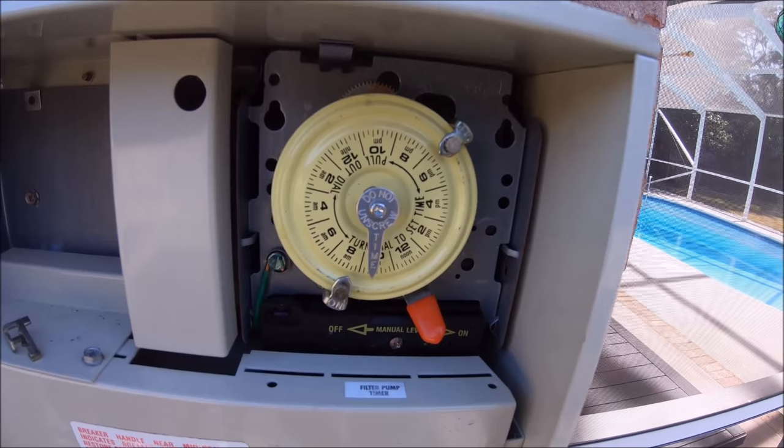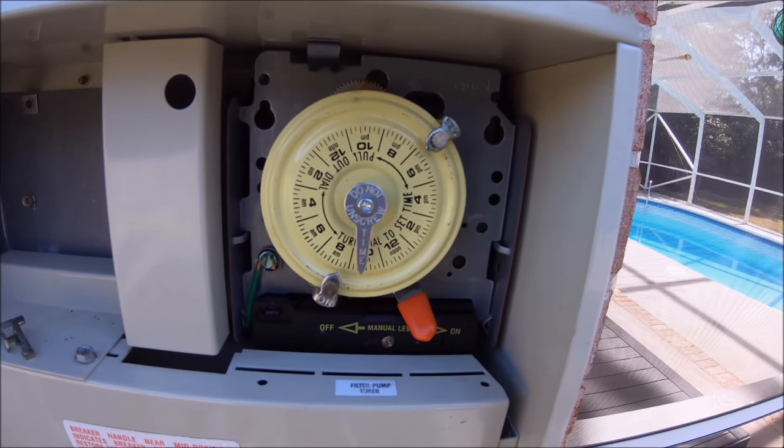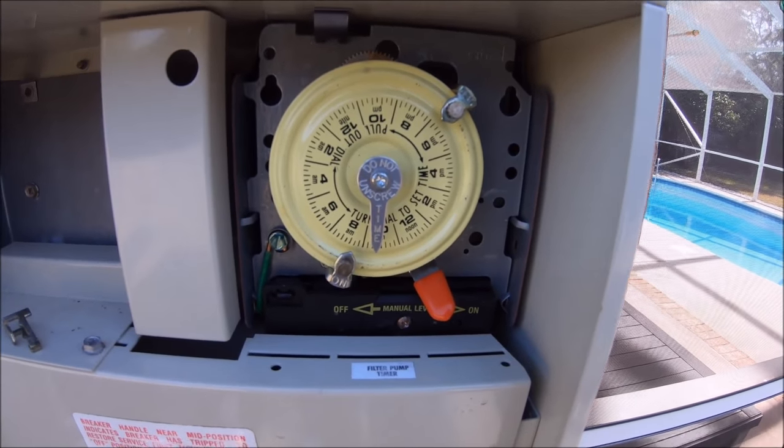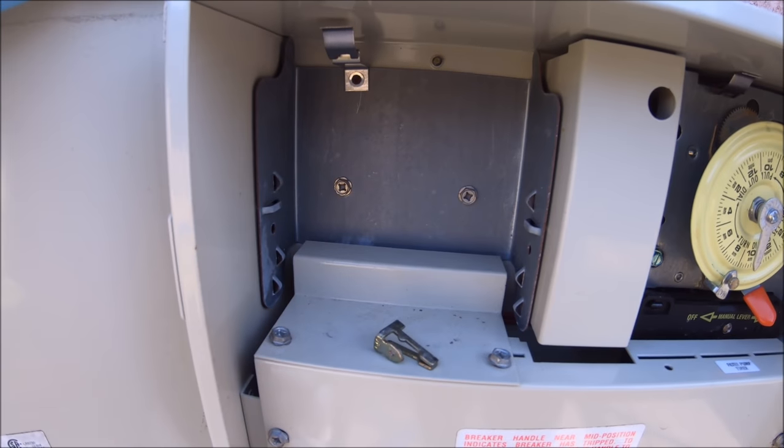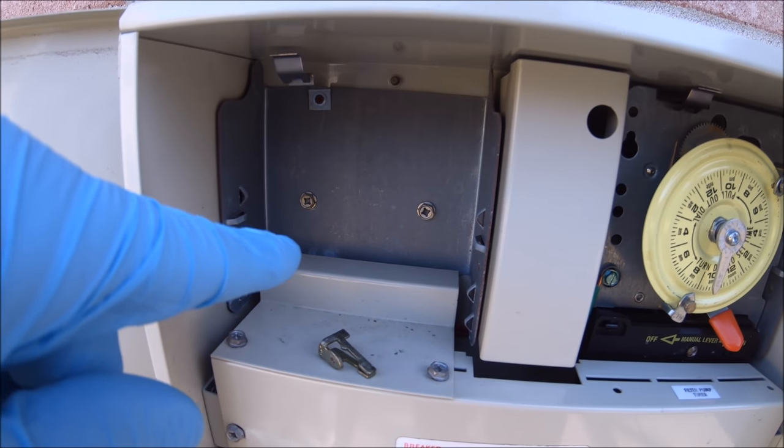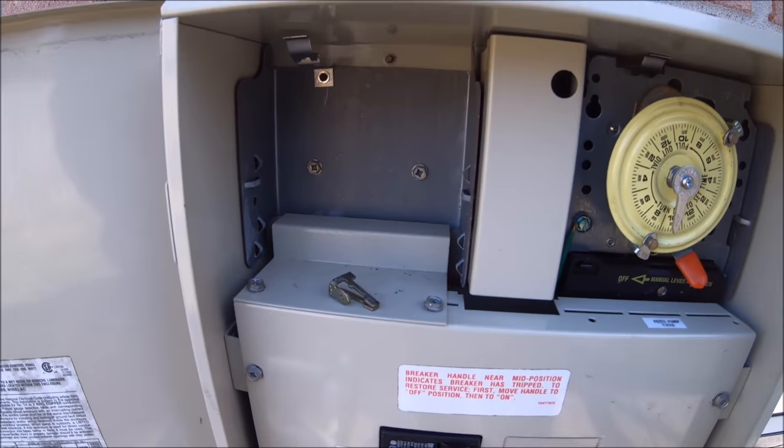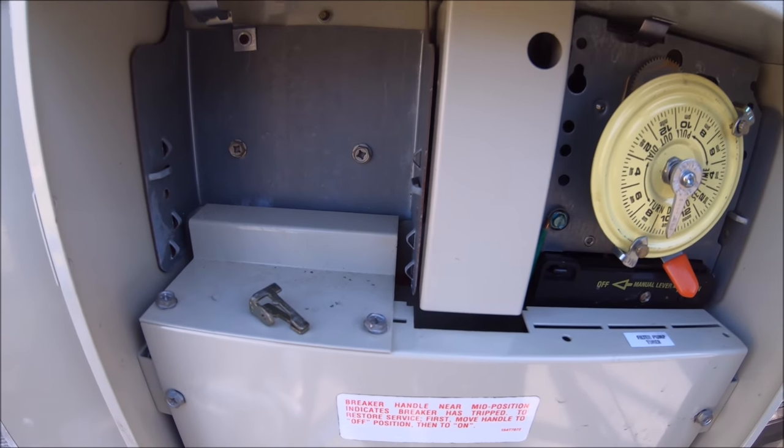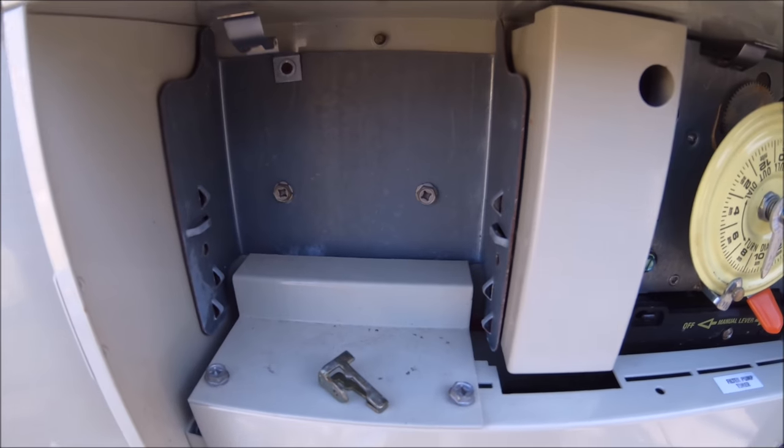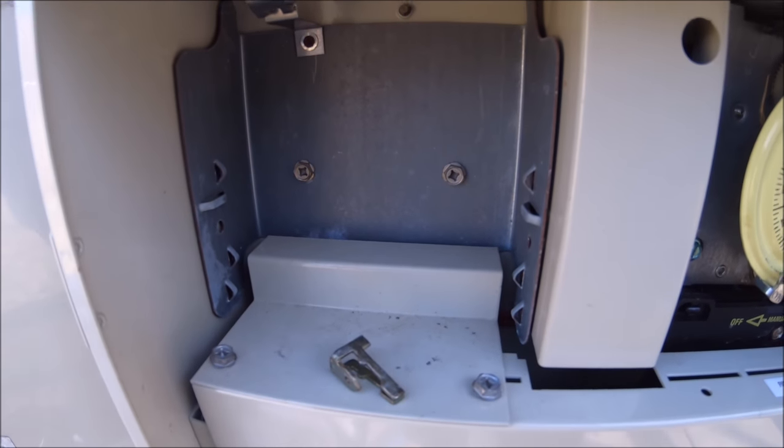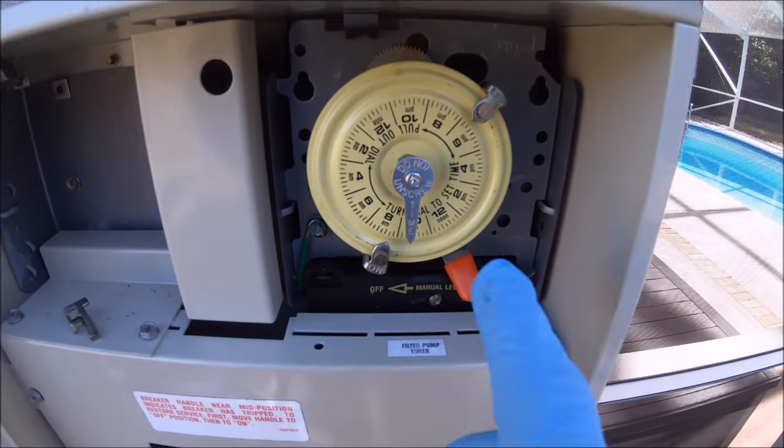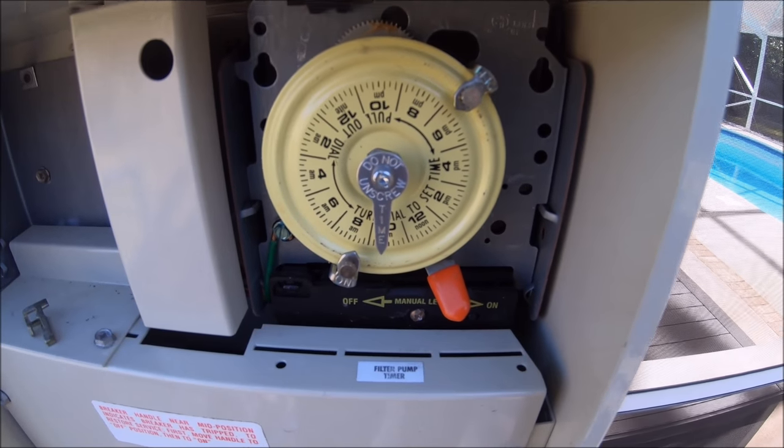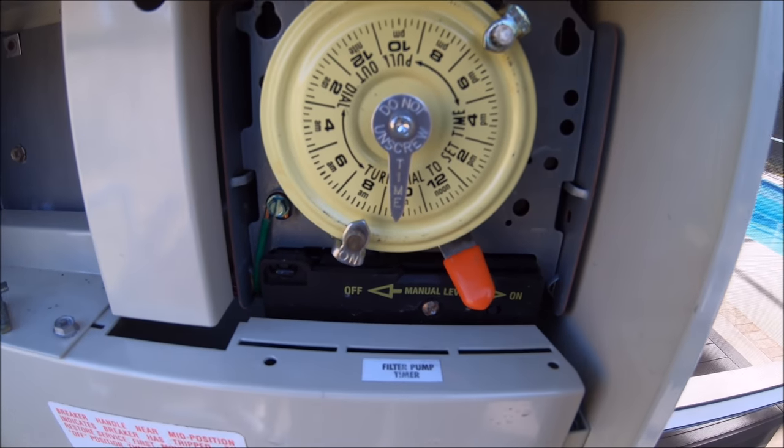And so that's pretty much all you really need to know. If you have a Polaris or an automatic pool cleaner, you may have one timer right here. This one or the other will control the filter. I think usually the automatic cleaner will be on the left. It just depends - I have it different at some of my accounts. But this one doesn't have an automatic cleaner, so it just has one timer.